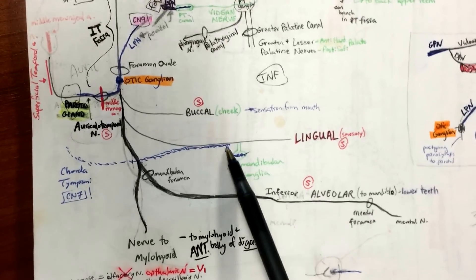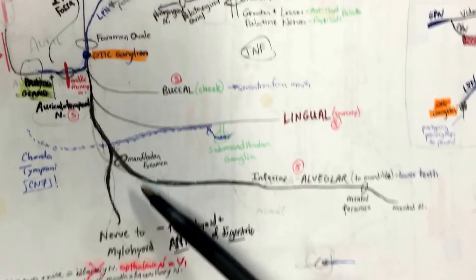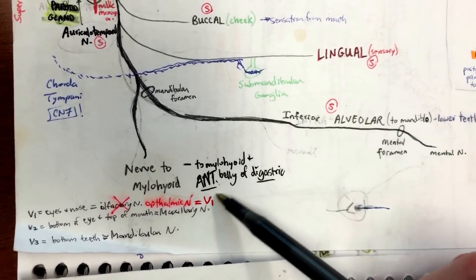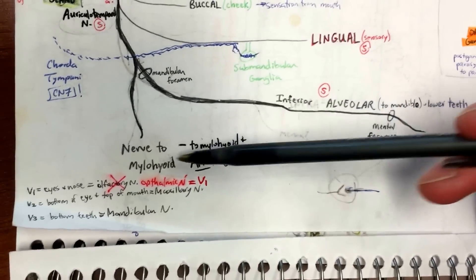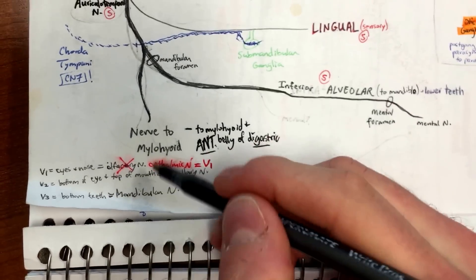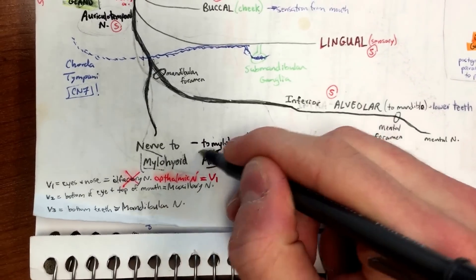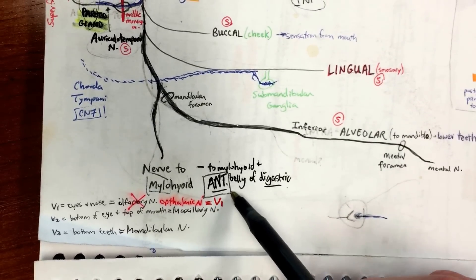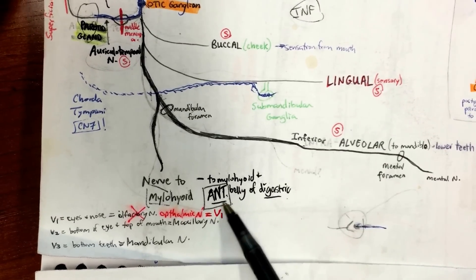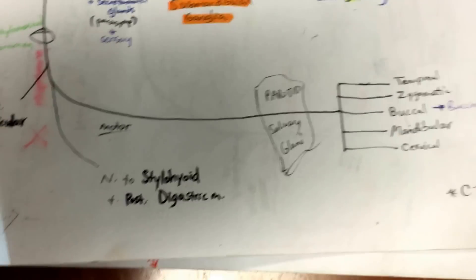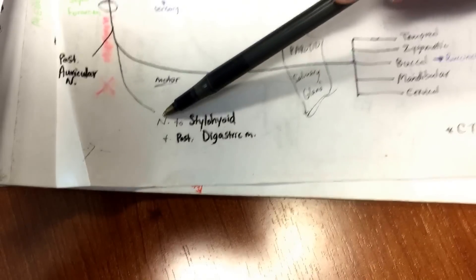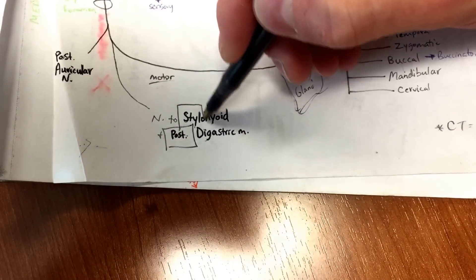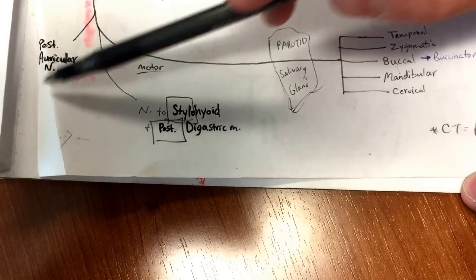Moving on, before the mandibular foramen, V3 gives off two important nerves: the nerve to mylohyoid and the nerve to the anterior belly of the digastric. Two connections to make here: mylohyoid and anterior belly of digastric from V3, as opposed to CN7, which gives off the nerve to the posterior belly of the digastric and the nerve to stylohyoid. So stylo and posterior are cranial nerve 7, as opposed to V3 which has mylo and anterior.